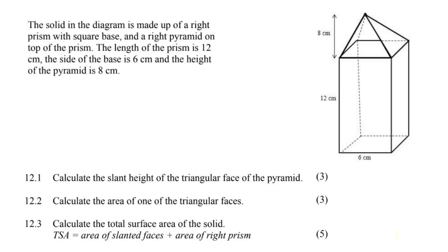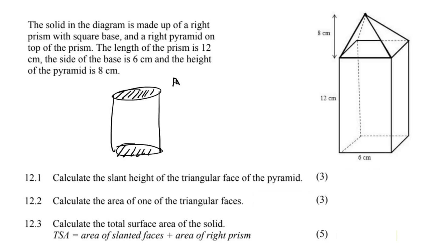For example, if we have a cylinder, we know that it's got a circle at the top and a circle at the bottom. So when you are looking at the surface area, we know that a circle is π r squared, and there are two of them at the top and the bottom. Then there's also this part that goes around the shape, all the way around.